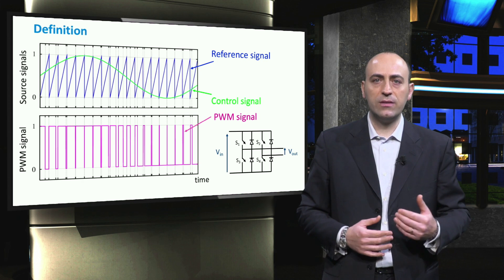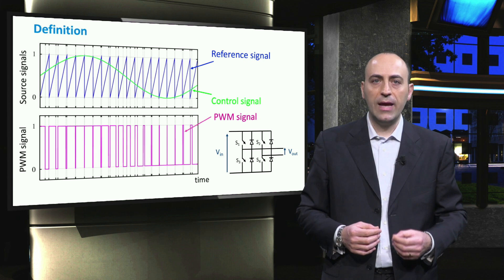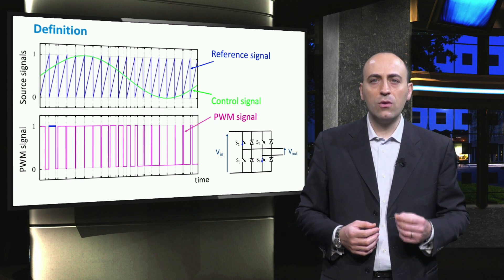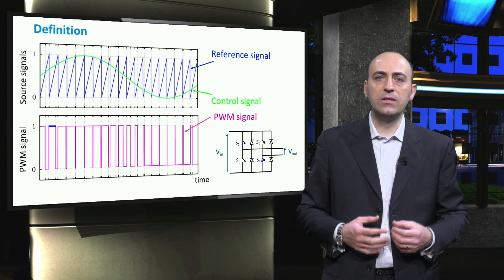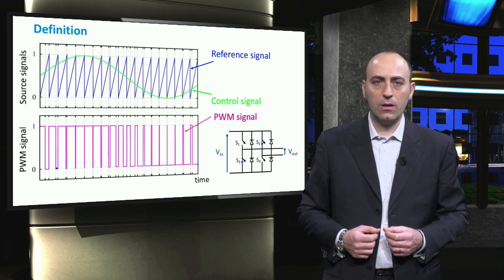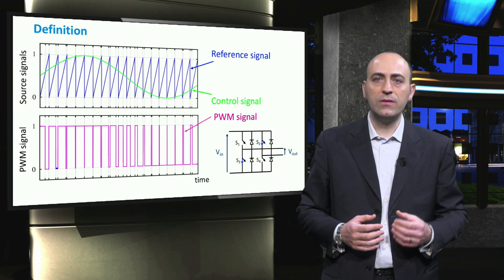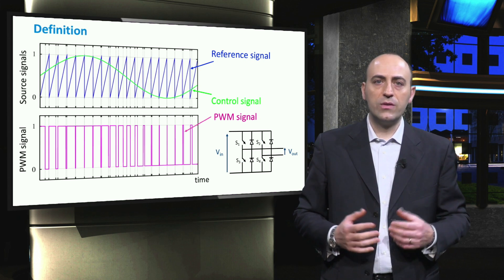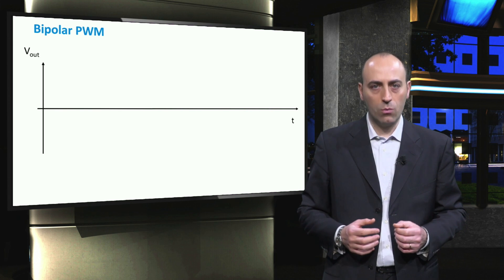At a given instant, if the control signal is greater than the sawtooth signal, the PWM signal is equal to 1, and switches S1 and S4 are closed. If the control signal is lower than the sawtooth, then the PWM signal is equal to 0, and switches S2 and S3 are closed. The two PWM states, alternating over a time frame, determine the output signal of the inverter.